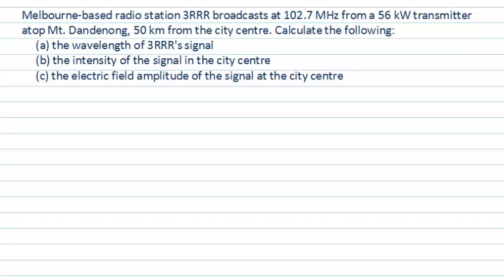This viscast will look at the broadcast of a radio signal as an example of some properties of electromagnetic waves. Let's interpret what this question is asking. It's talking about a radio signal, which is an example of an electromagnetic wave — just like light or microwave radiation. All of these are examples of oscillating electric and magnetic fields.